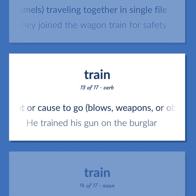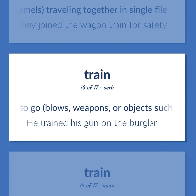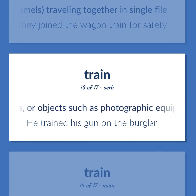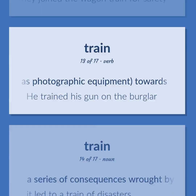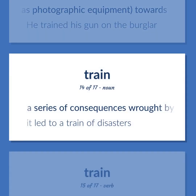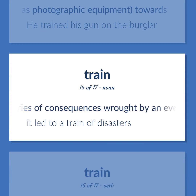Point or cause to go — blows, weapons, or objects such as photographic equipment — towards. He trained his gun on the burglar. A series of consequences wrought by an event. It led to a train of disasters.